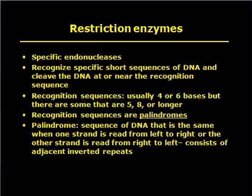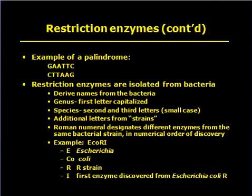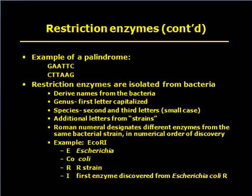The recognition sequence is usually 4 or 6 base pairs, but some are 5, 8, or longer. Recognition sequences are palindromes — a palindrome sequence of DNA reads the same when one strand is read left to right and the other strand is read right to left, consisting of adjacent inverted repeats. Restriction enzyme examples include those isolated from bacterial species, such as EcoRI from E. coli R strains.